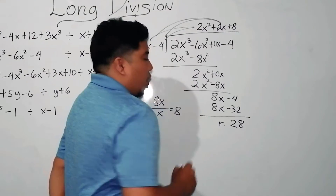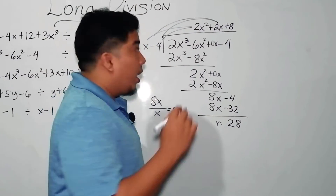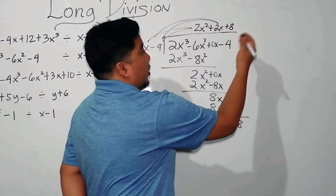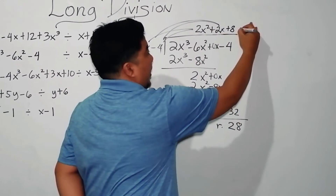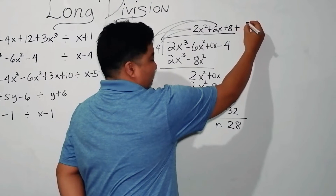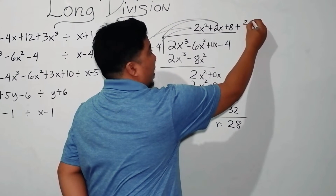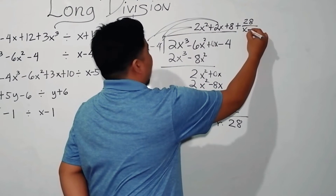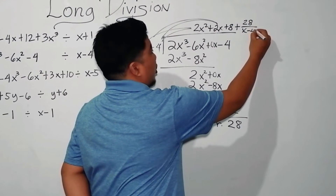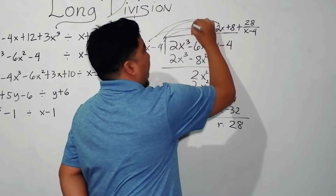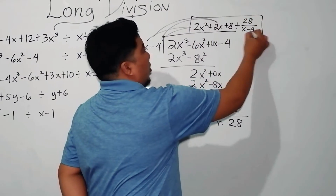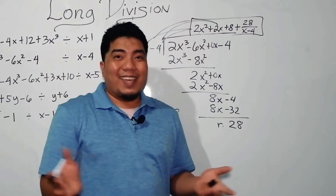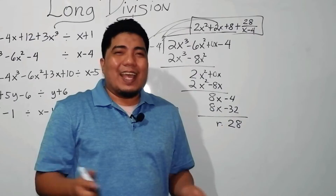Your final answer is 2x squared plus 2x plus 8 plus 28 over (x minus 4). Easy, right?